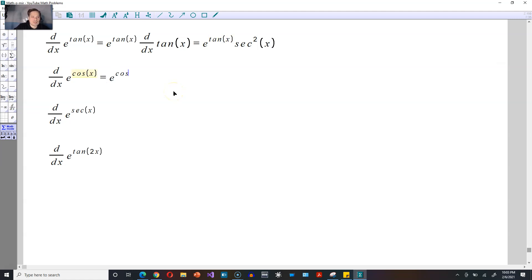For the next one, copy it directly at first. e to the cosine of x gets copied, then multiply by the derivative of cosine of x. So it's e to the cosine of x, and then negative sine of x. There's a negative present, put that out front. So negative sine of x times e raised to the cosine of x.